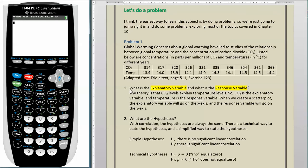Number 1 here says, what is the explanatory variable and what is the response variable? The theory in this question is that the CO2 level explains the temperature level. So CO2 is the explanatory variable, and temperature is the response variable. When we create a scatter plot, the explanatory variable will go on the x-axis, and the response variable will go on the y-axis.